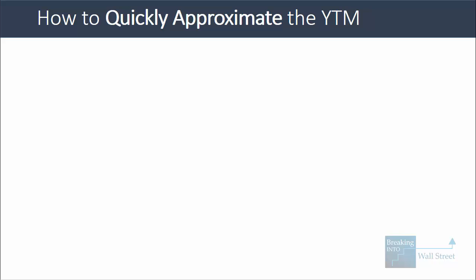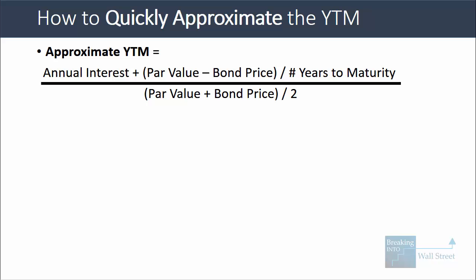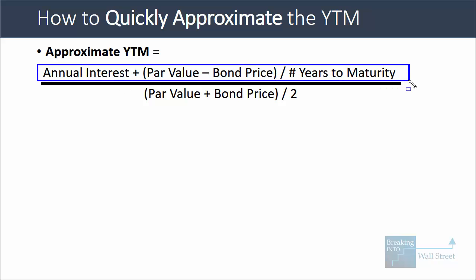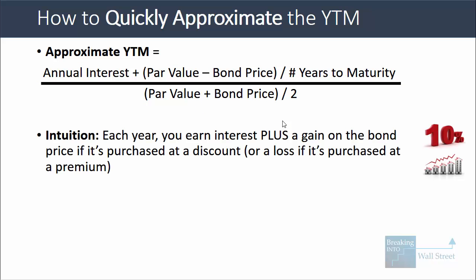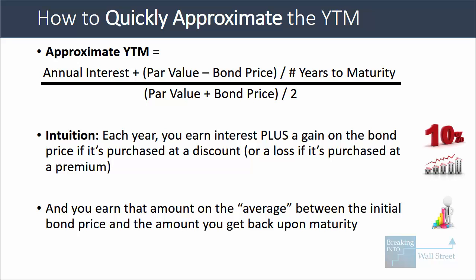Here is a shortcut method to calculating yield to maturity that ties directly into that intuition. To approximate it, you take the annual interest payment, then add the par value minus the bond price divided by the years to maturity. That top part gives you how much interest you're earning each year plus the average capital gain or loss per year. Then you divide by the average price over this period — the average between the par value you get back at the end and the bond price you pay today.